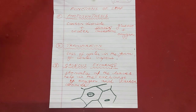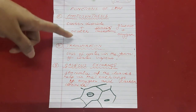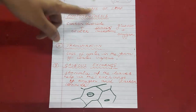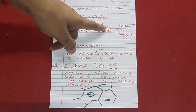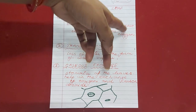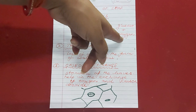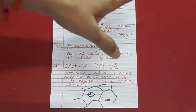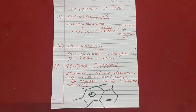In brief, photosynthesis means carbon dioxide and water absorbed by the plant, in the presence of sunlight and chlorophyll, form glucose — that is food — and oxygen is liberated during this process. The next function of the leaf is transpiration.